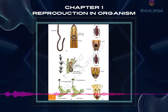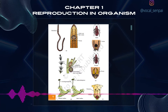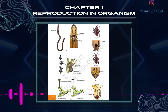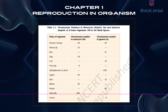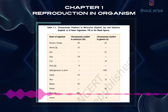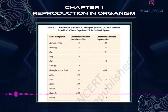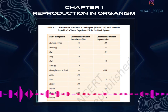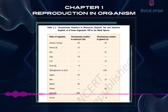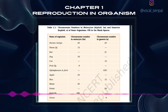In animals, are individuals of all species either male or female, unisexual? Or are there species which possess both the reproductive organs, bisexual? Earthworms, sponge, tapeworm and leech are typical examples of bisexual animals that possess both male and female reproductive organs, and are called hermaphrodites. Cockroach, figure 1.6b, is an example of a unisexual species.